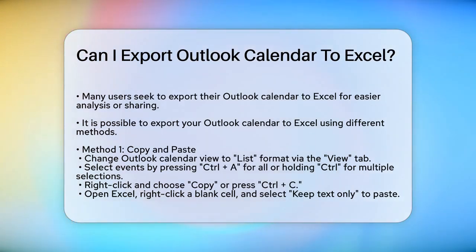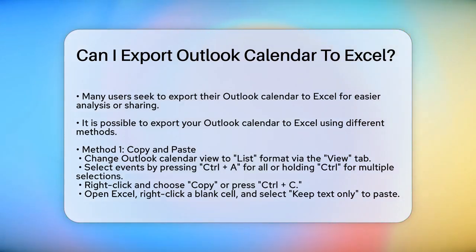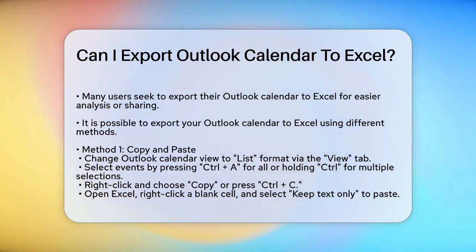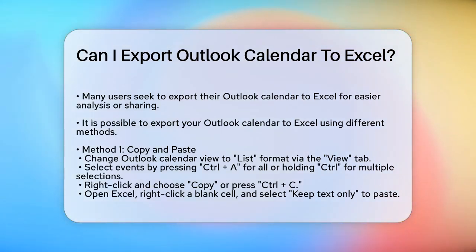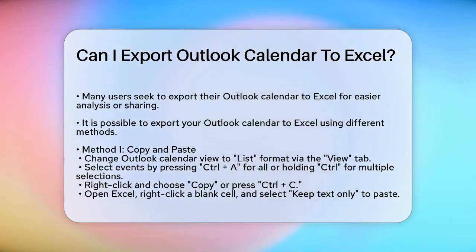Method 1: Copy and Paste. One of the simplest ways is to copy and paste your calendar events directly into Excel. Start by opening your Outlook Calendar and changing the view to a list format. To do this, go to the View tab, click Change View, and select List. This will display your events in a list where you can see details like subject, location, and time.